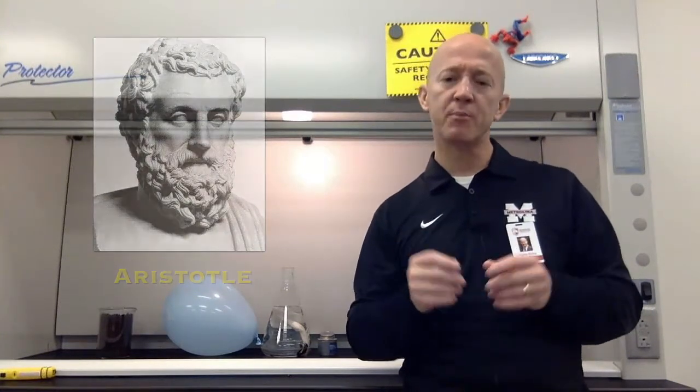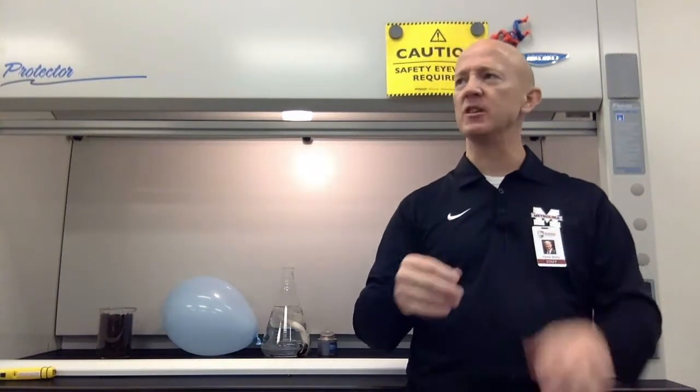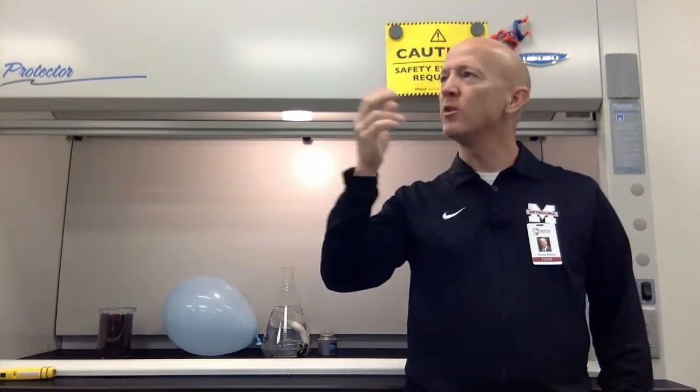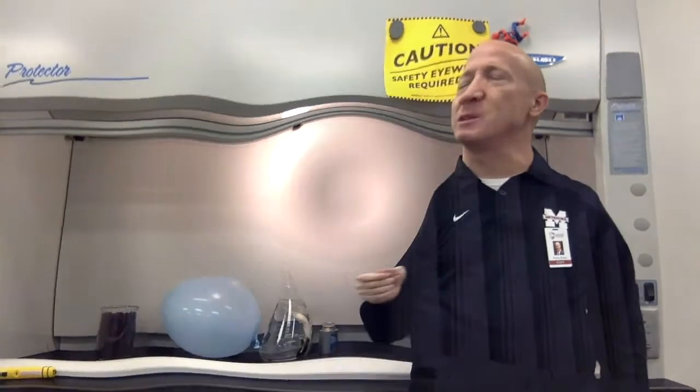Unfortunately for Democritus, around that same time, there was another philosopher — and you may have heard of him — his name was Aristotle. Aristotle held to that conventional wisdom. One of the problems that Aristotle had with Democritus was this idea of empty space. Democritus had held that these atoms move about in empty space, but Aristotle didn't believe in empty space. Can you imagine? Two colossal philosophers, head to head, talking about an idea such as this.